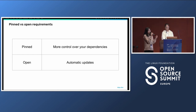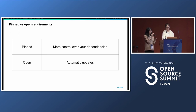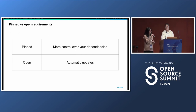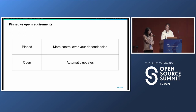As NPM automatically updates to latest versions, projects picked up the vulnerable version 3.3.6 by default. The hack wasn't discovered for a couple of months — only eventually discovered because of a small error the attacker made. The vulnerable version had been downloaded millions of times by then. We can see there are good and bad things about pinned versus open requirements. Pinned requirements give you more control: you don't automatically pick up vulnerabilities or breaking changes. One way to get the best of both is to use pinned requirements with a bot like Dependabot or Renovate Bot that creates PRs to update pinned requirements when a new version is available.